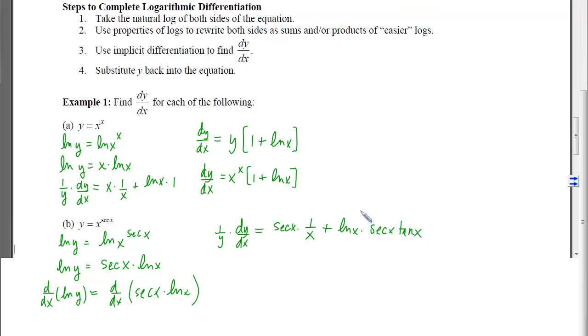Now, after you've done this a while, you'll start to combine some of these steps. I can see right here that I need to multiply both sides by y in order to get dy/dx alone. But instead of writing y and then having to write everything over again, I'm just going to replace y at the same time. So I'll have an x to the secant of x, which is the same thing as multiplying by y, times the secant of x over x, plus ln of x, secant of x, tangent of x.